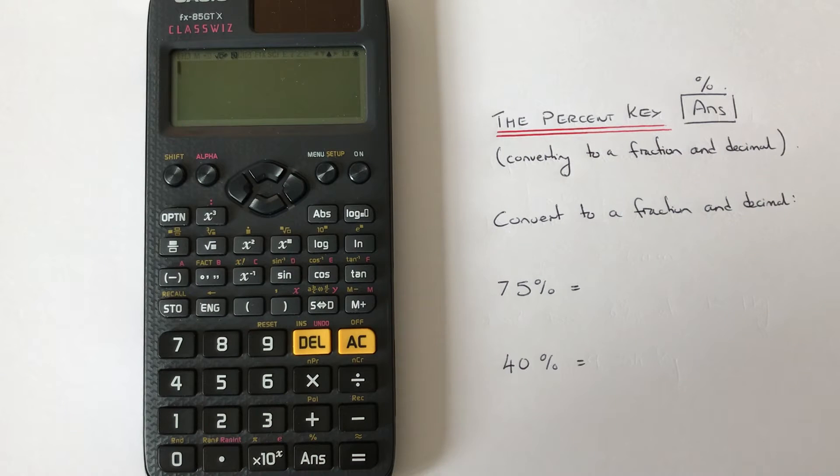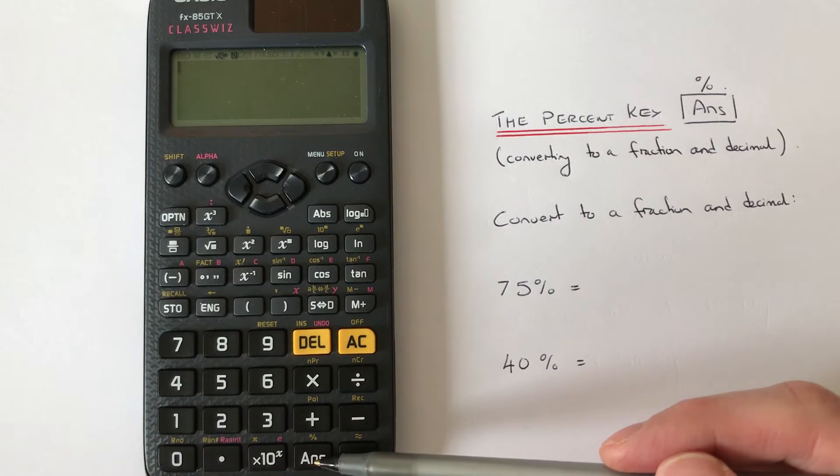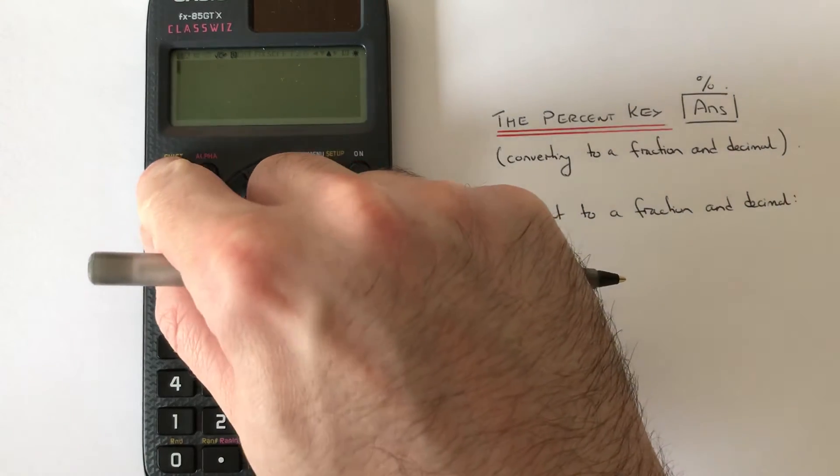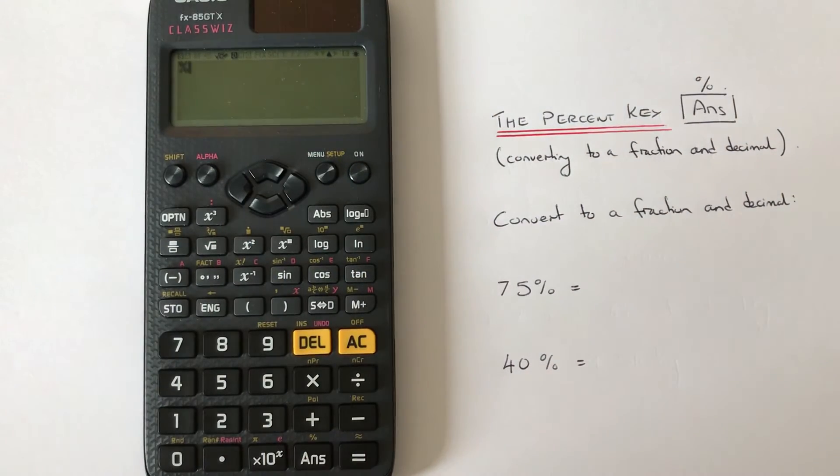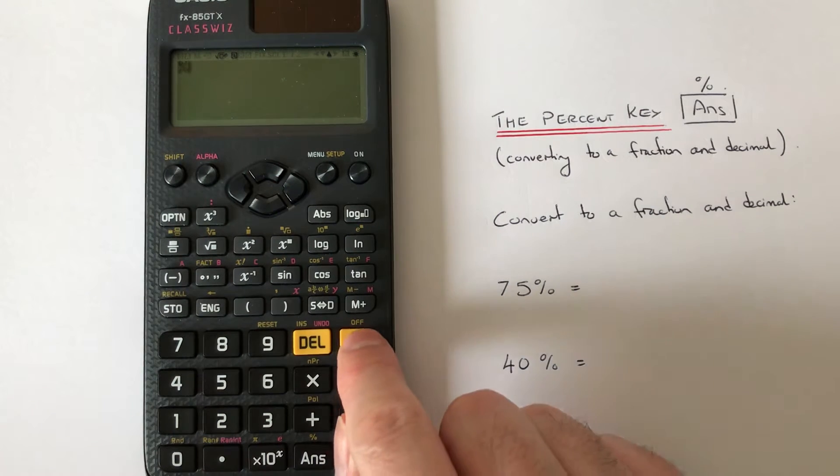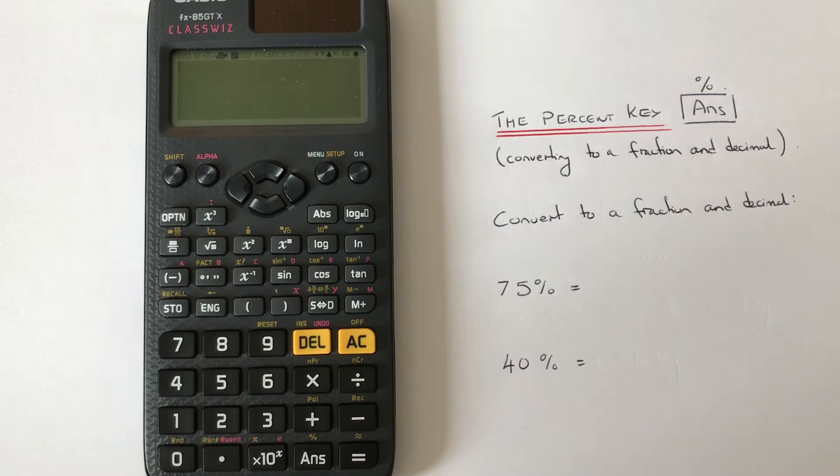To get your percentage up on your Casio calculator, it is on the second function of the ANS key, so press Shift ANS. Let's have a look at our first example then. We've got to convert 75% to a fraction and decimal.